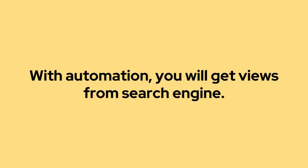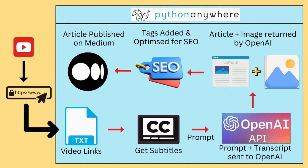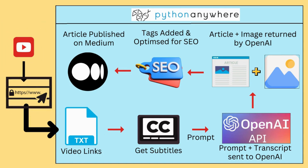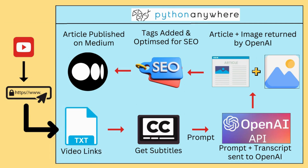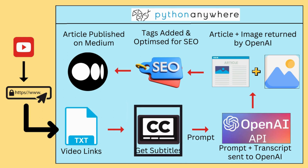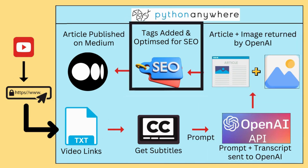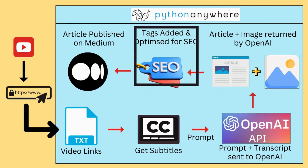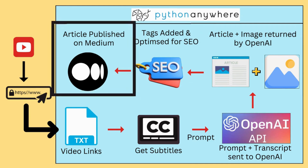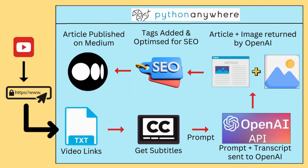Let me re-explain the automation process. First, go to YouTube, search for videos, get the links, and put those links inside a TXT file line by line. Then run the program — it will fetch the video links one by one, retrieve the subtitles of each video, and send them along with a prompt to OpenAI. OpenAI will convert it into an article along with an image. Our program will combine the image, article, and tags, optimize for SEO, and finally automatically publish it to Medium. Make sure to watch each chapter of this module carefully.